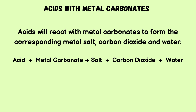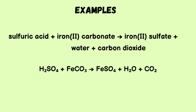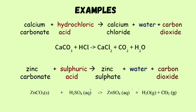The next reaction is between acids and metal carbonates. Acids react with metal carbonates to form the corresponding metal salt, carbon dioxide, and water. For example: sulfuric acid plus iron(II) carbonate gives iron(II) sulfate plus water plus carbon dioxide. Calcium carbonate plus 2HCl gives calcium chloride plus water plus carbon dioxide. Zinc carbonate plus sulfuric acid gives zinc sulfate plus water plus carbon dioxide.